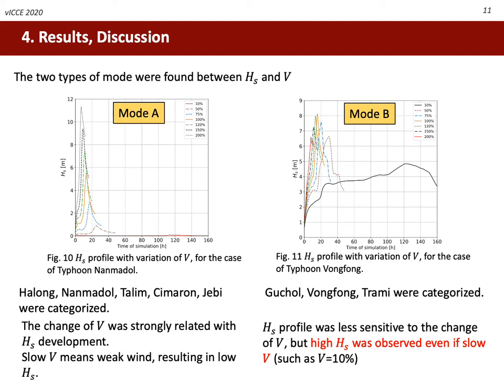Two kinds of mode were found between Hs and V. Mode A in the left figure shows a strong effect of translate speed on wind waves — stronger wind could generate higher waves, but if a typhoon moves slowly, the wave was not high. Five typhoons showed this mode. Mode B in the right figure showed a completely different profile: Hs was less sensitive to the change of V, but high Hs was observed even if translate speed was slow. The black line in the right figure shows the 10% case, where translate speed is around 5 to 7 km per hour — almost stationary — and high waves of more than 4 meters lasted over 3 days.